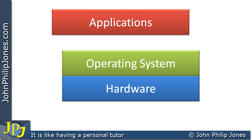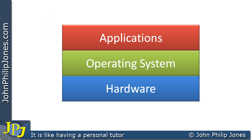Sitting on top of the operating system we have the various applications that we can run, for example a word processor, a spreadsheet, a database, a web browser. All of these are applications and they ultimately control the hardware, but they do so with the cooperation of the operating system. So what we're looking at here is a very simplified view: hardware at the bottom, an operating system that controls the hardware, and on top are the applications that we use every day, which ask the operating system to help control the computer hardware.